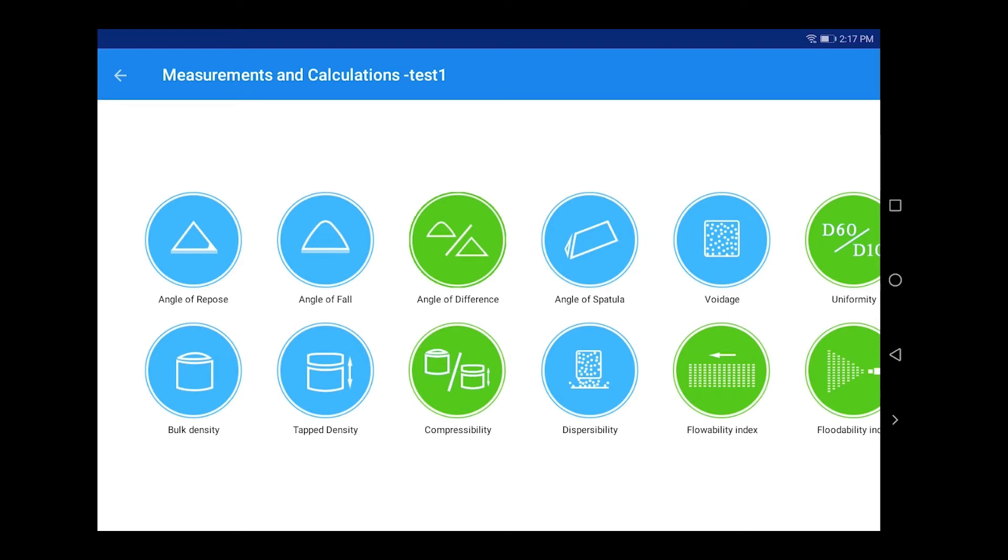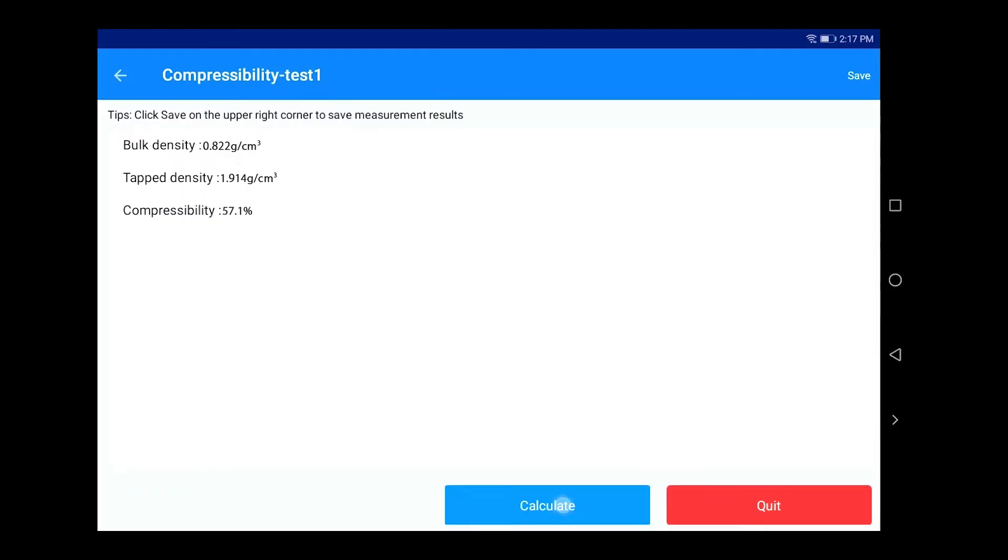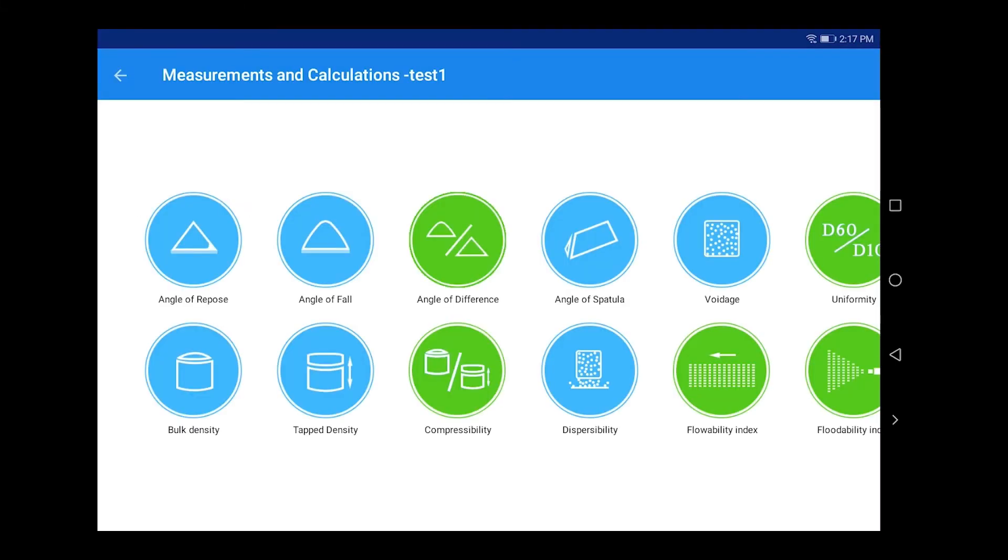After the bulk density and tap density are measured and saved, click Compressibility. Click Calculate to calculate compressibility. Click Save and quit to complete the calculation of compressibility.